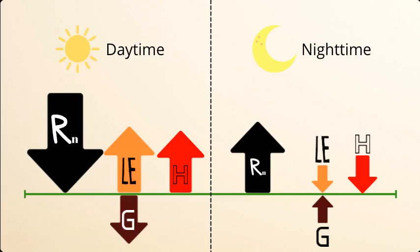The latent heat flux is typically near zero during the night, although negative values indicating condensation are possible. For H, the sensible heat flux, during the daytime the land surface is often warmer than the atmosphere, so the surface heats the air. As this air comes into direct contact with the land surface, energy is transferred from the surface to the air by conduction.